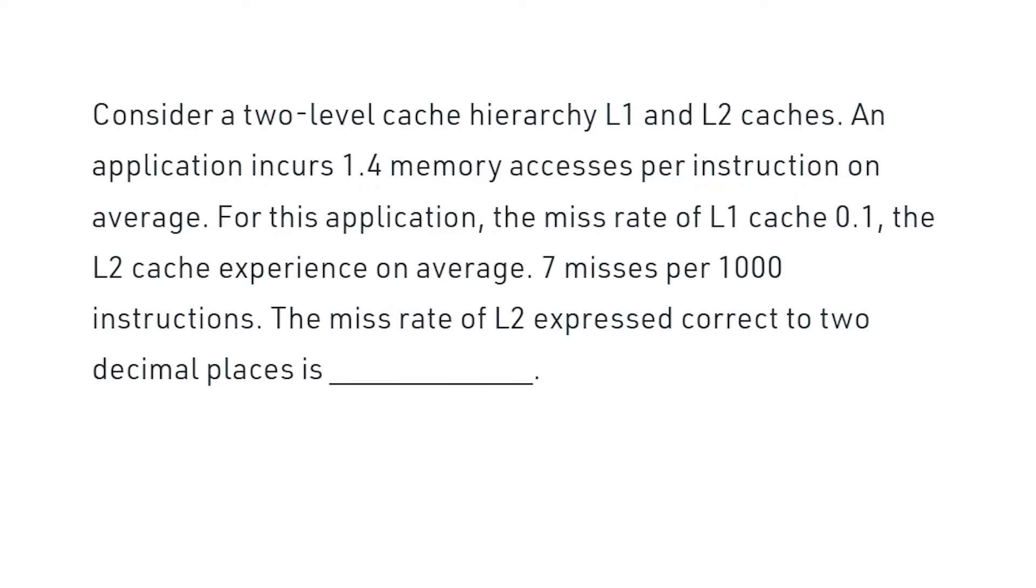Consider a two-level cache hierarchy with L1 and L2 caches. An application incurs 1.4 memory accesses per instruction on average.